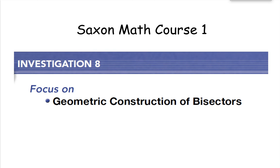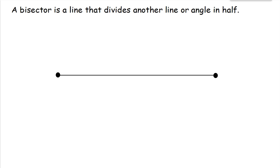Hello everyone. Today's lesson is Investigation 8, Geometric Construction of Bisectors. A bisector is a line that divides another line or angle in half. And the way we find out the exact half is one of two ways.